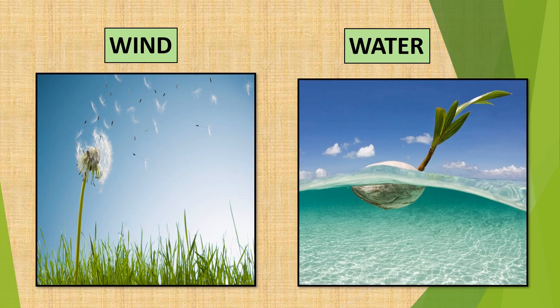Seeds that are small in size and light in weight are dispersed by wind. Cotton and madar seeds are dispersed by wind. They have fine long hair around them, so they are easily carried away by wind.